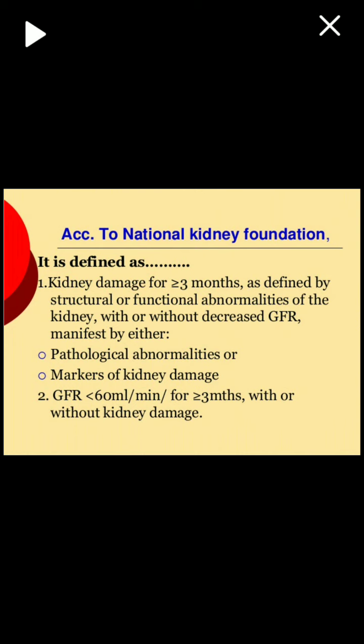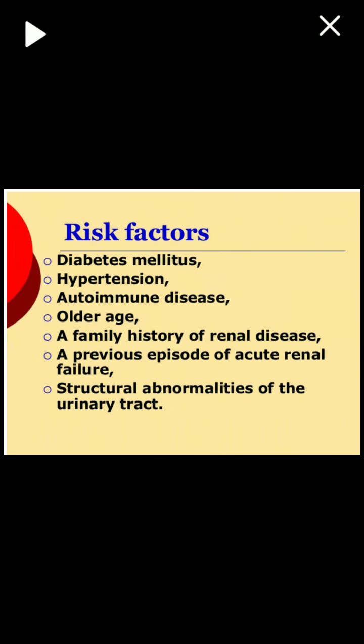The normal glomerular filtration rate is around 90 to 120 ml per minute. If it is less than 60 ml per minute for more than 3 months, it is defined as chronic kidney disease. The risk factors in which kidneys get affected include diabetes mellitus, hypertension, autoimmune disorders, older age, family history of renal disease, and a previous episode of acute renal failure or structural abnormalities of the urinary tract.